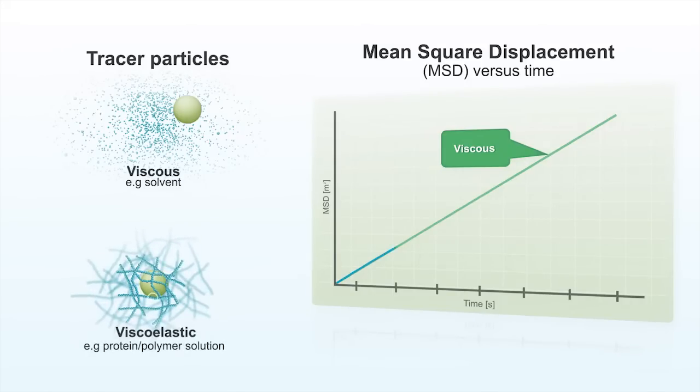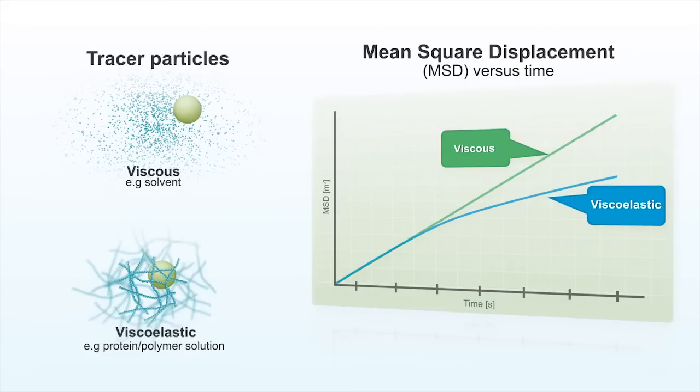The correlation function of the tracer particles in the sample is measured using dynamic light scattering or DLS and this is directly related to the mean squared displacement or MSD of the probe particles.